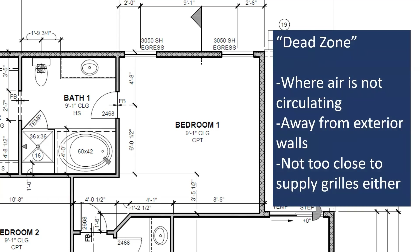We also don't want the return too close to the supply grills, because then the cold supply air would just get sucked back into the return and wouldn't have a chance to mix with the room air. So for this example room, a good location for the return grill would be someplace like here, tucked in the alcove where the door is.